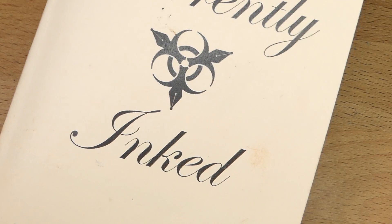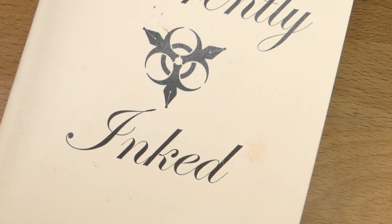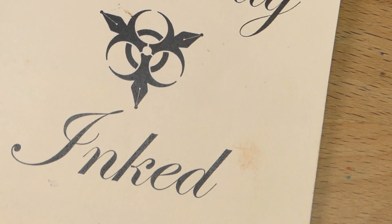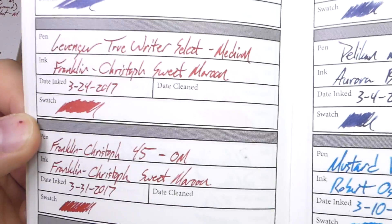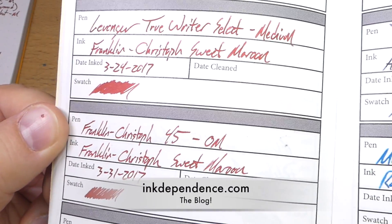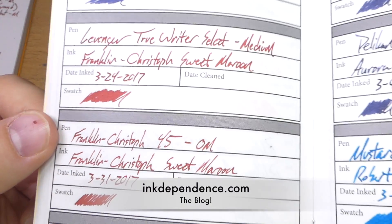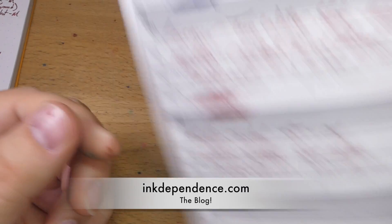Here it is in a currently inked. I believe this is currently called Inky Fingers now. This is from Pen Habit. This is wheat straw paper. There's sweet maroon from a couple of pens. You'll see more of this stuff in close-up static images on my blog, inkdependence.com.